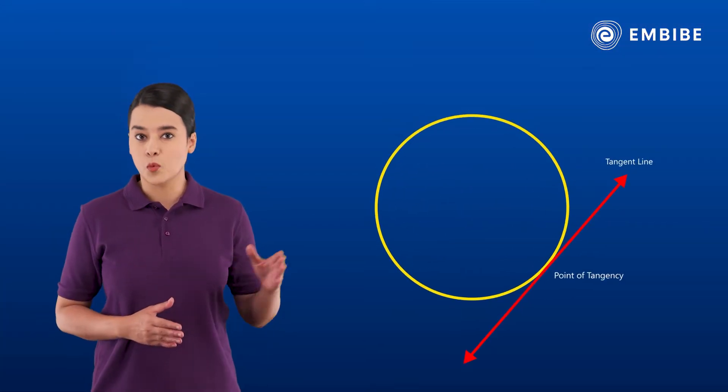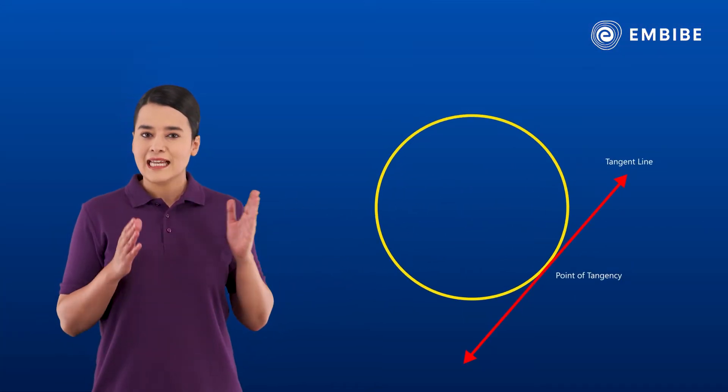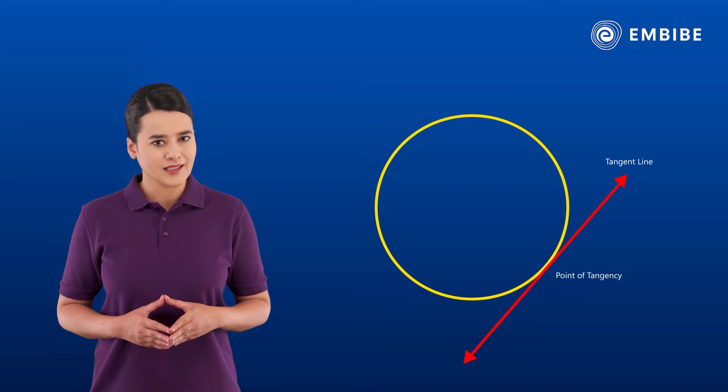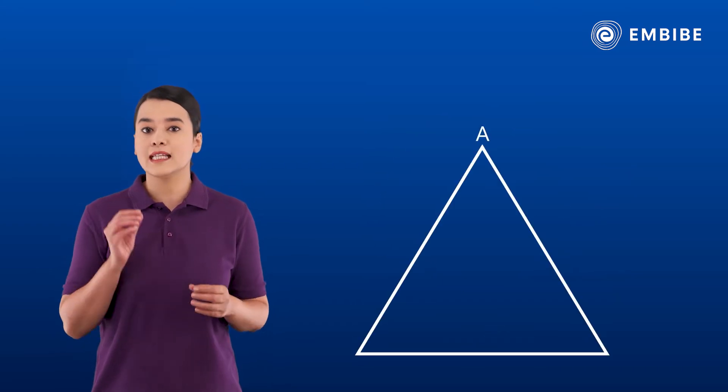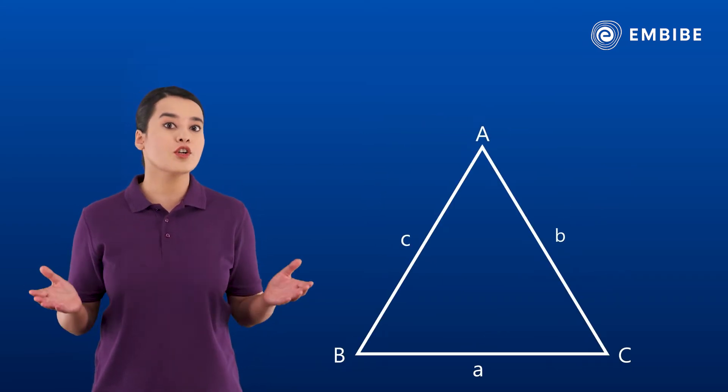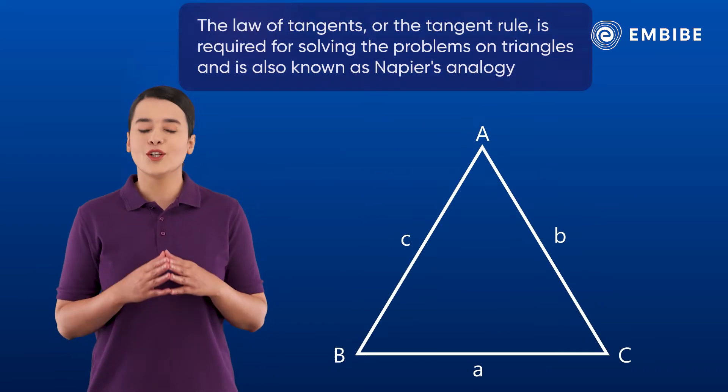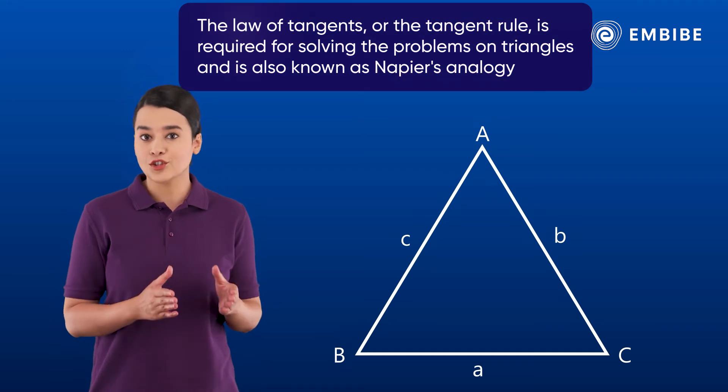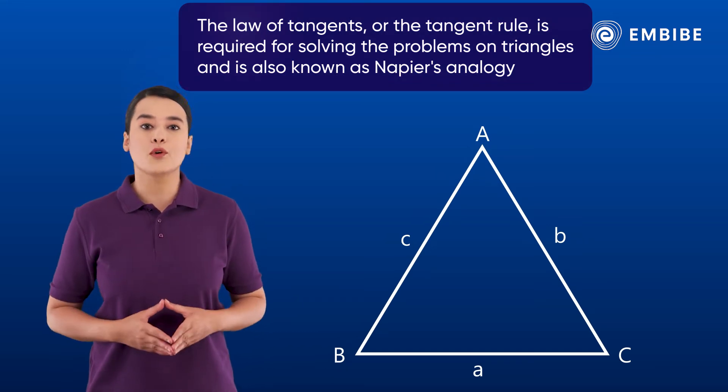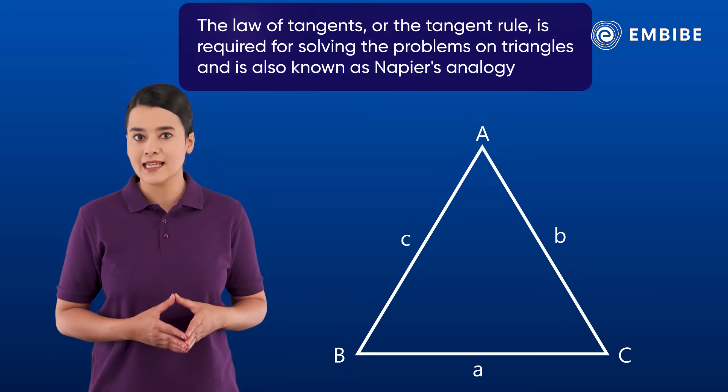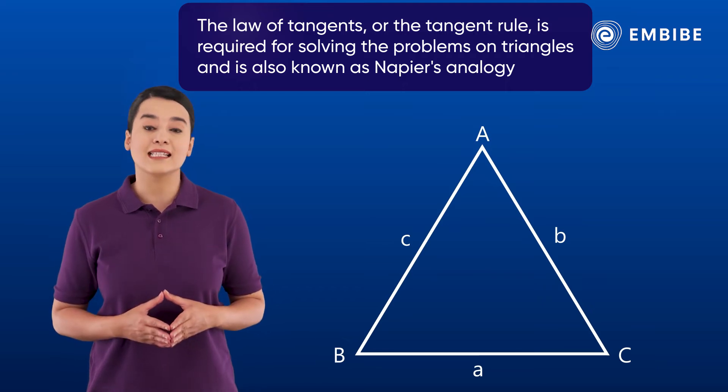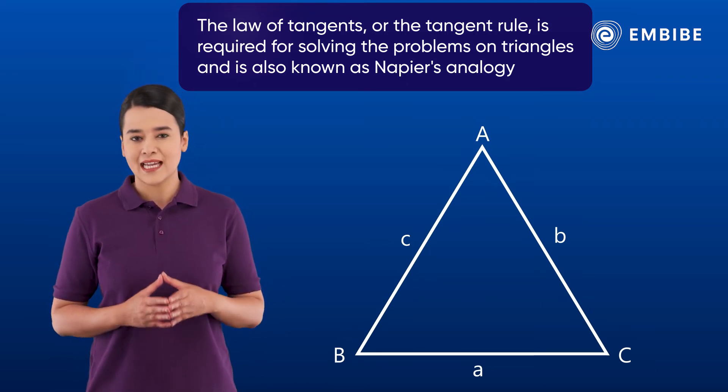What do you think when you hear the word tangent? Something related to a circle, right? But what if I tell you it has many things to do with triangles as well? The law of tangents, or the tangent rule, is required for solving problems on triangles and is also known as Napier's analogy. Let's prove Napier's analogy in this session.